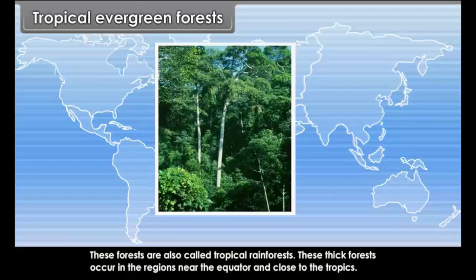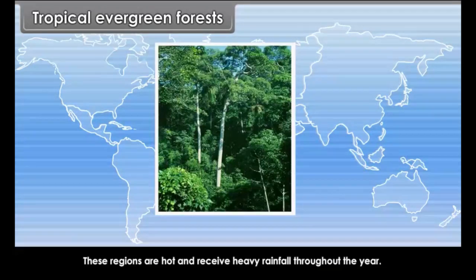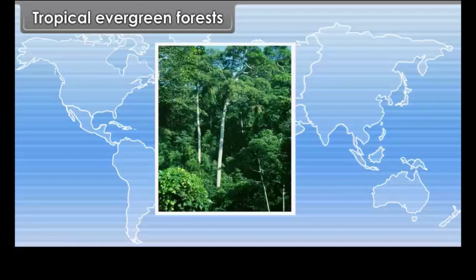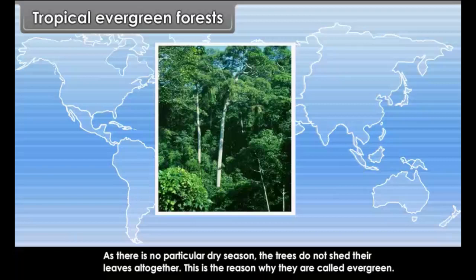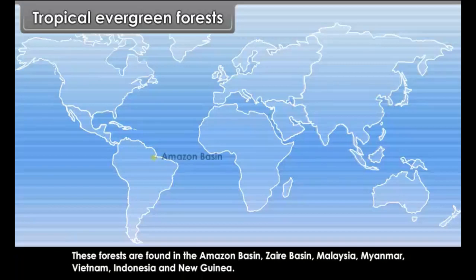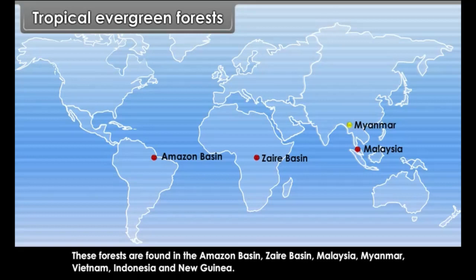Tropical Evergreen Forests are also called tropical rainforests. These thick forests occur in the regions near the equator and close to the tropics. These regions are hot and receive heavy rainfall throughout the year. As there is no particular dry season, the trees do not shed their leaves altogether — this is why they are called evergreen. These forests are found in the Amazon basin, Zaire basin, Malaysia, Myanmar, Vietnam, Indonesia and New Guinea.